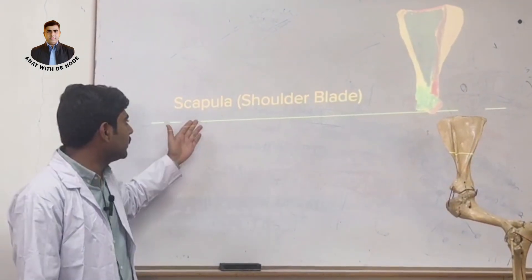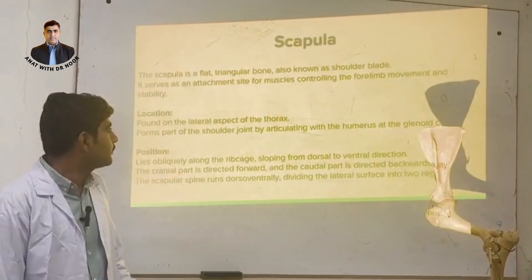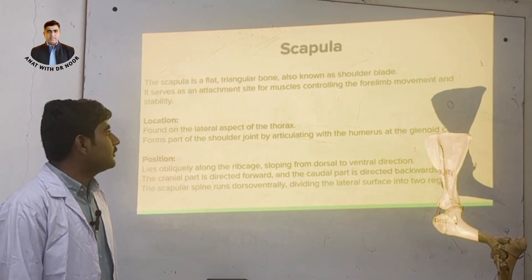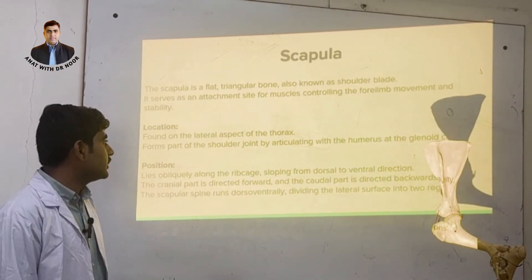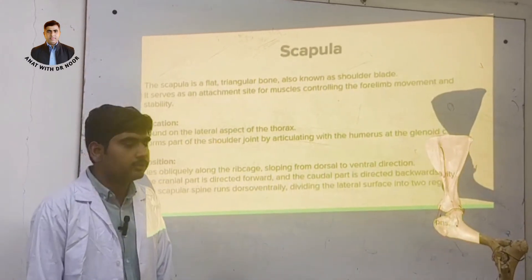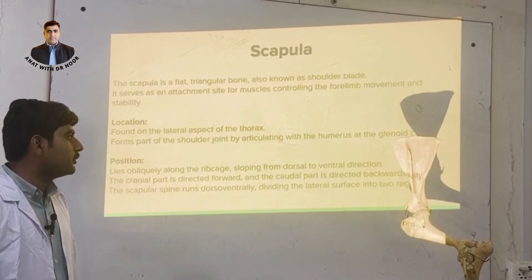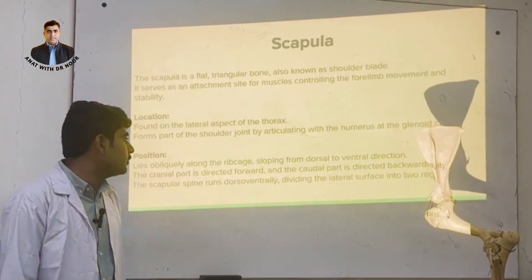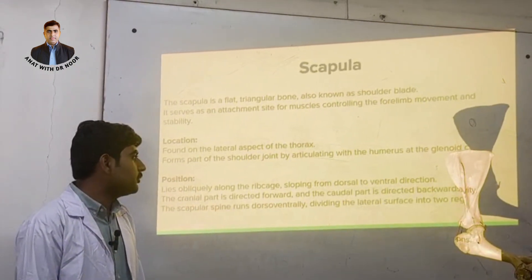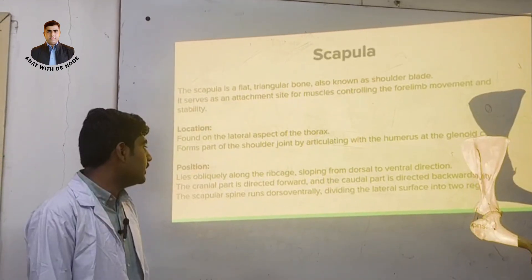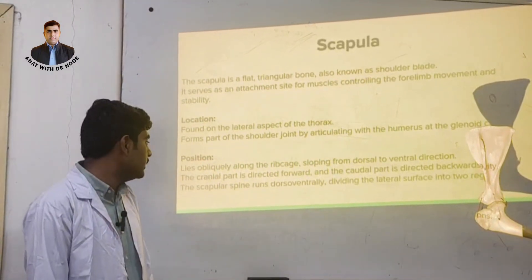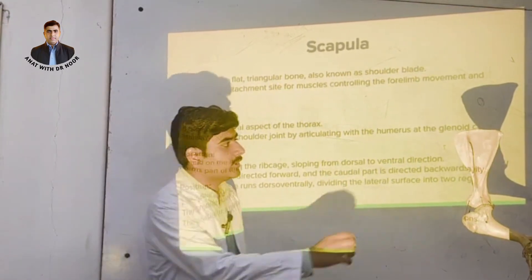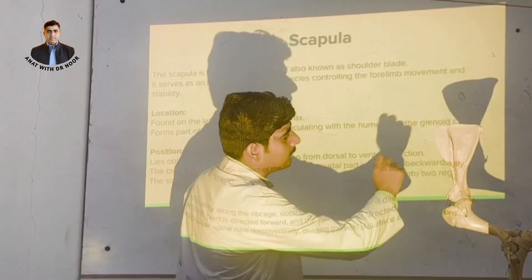The scapula, also known as the shoulder blade, is a flat triangular bone. It serves as the attachment site for muscles controlling the forelimb and stability. It is found in the lateral aspect of the thorax and forms part of the shoulder joint by articulating with the humerus at the glenoid cavity. It lies obliquely along the ribcage, sloping from dorsal to ventral direction. The scapular spine runs dorso-ventrally, dividing the lateral surface into two regions: the supraspinous fossa and infraspinous fossa.